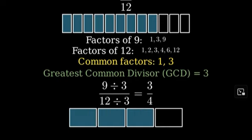Let's see what this looks like visually. If we group our original rectangles into sets of 3, we can see that 3 fourths is the same as 9 twelfths.